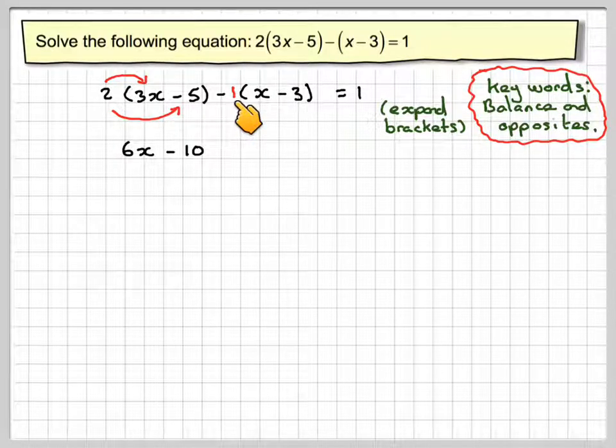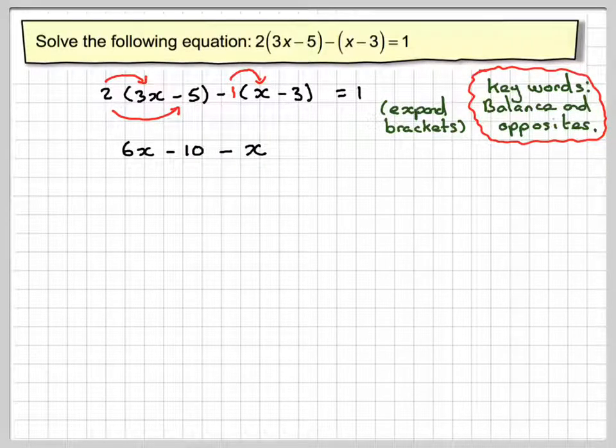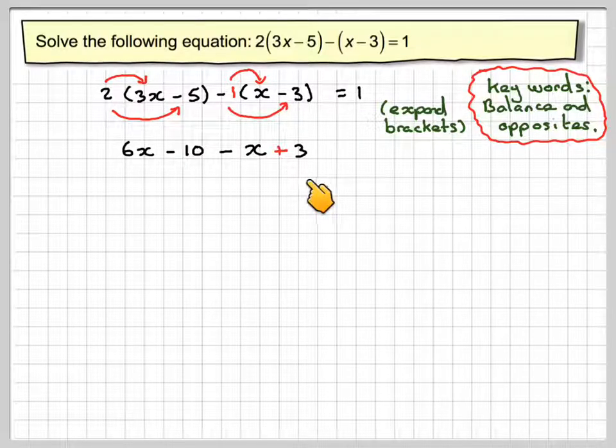Now you need to put in a minus 1 in front because there was nothing in front of that bracket. So minus 1 times x gives me minus x, and then minus 1 times minus 3 gives me plus 3.